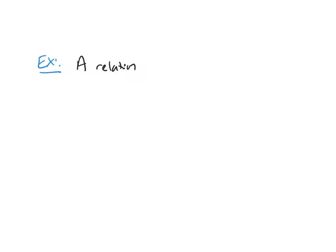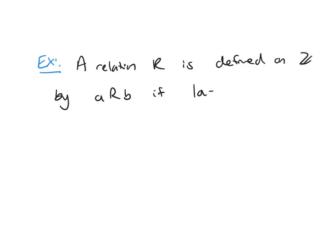Let's look at some examples. The first example: relation R is defined on ℤ by A relates to B if the absolute value of A minus B is less than or equal to 2. We want to prove or disprove the following.